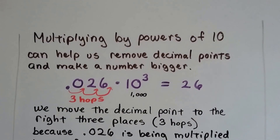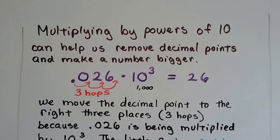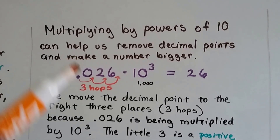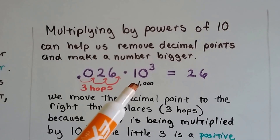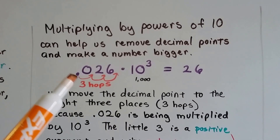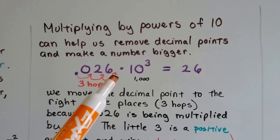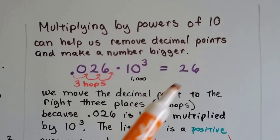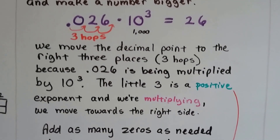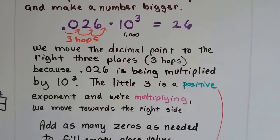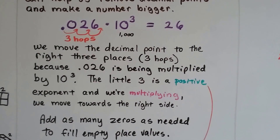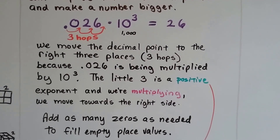Multiplying by powers of 10 can help us remove decimal points and make a number bigger. So 0.026 multiplied by 10 to the third power, which means 1,000 (10 times 10 times 10), we're going to put three hops to the right — 1, 2, 3 — for the decimal point. It's going to go behind the 6, so now we've got 26. We move the decimal point to the right three places because 0.026 is being multiplied by 10 to the third power.